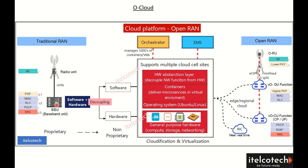In a traditional RAN, software and hardware are tightly coupled together. As we move towards cloudification, the first step is to ensure decoupling of the software and hardware, which is achieved through virtualization. Inside this box, we have general purpose hardware that is non-proprietary — we can have compute, storage, and networking from any supplier.